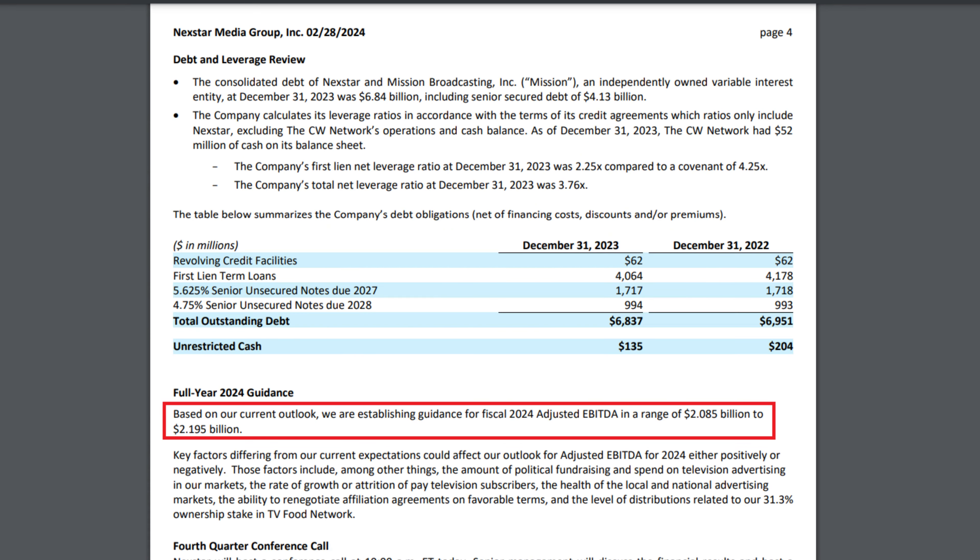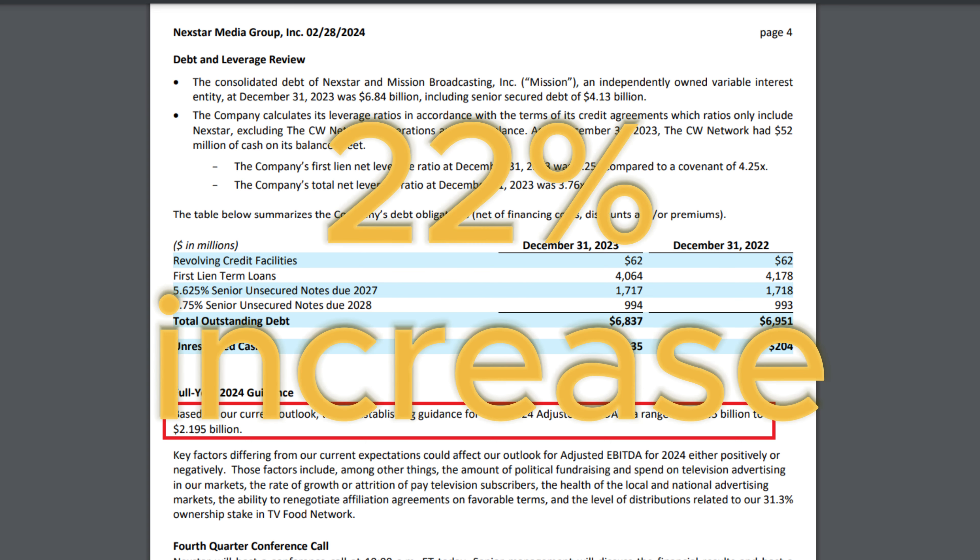When we go over the part about future forward-looking, we can see that based on the current outlook, we are establishing guidance for fiscal 2024 adjusted EBITDA in a range of $2.085 billion to $2.195 billion, a massive growth from previous year.